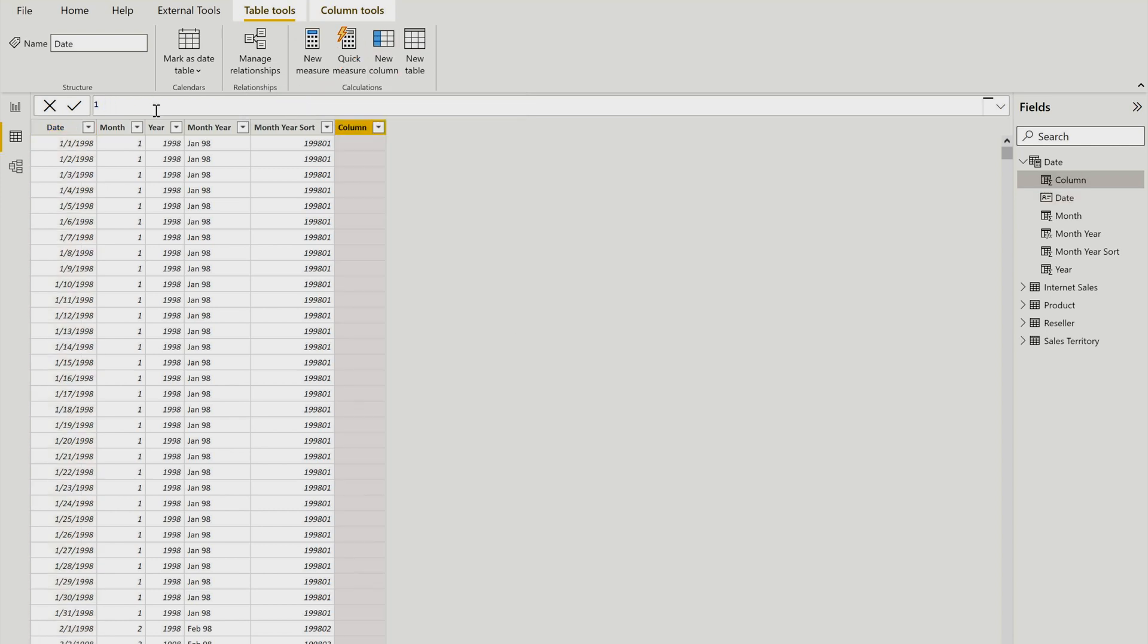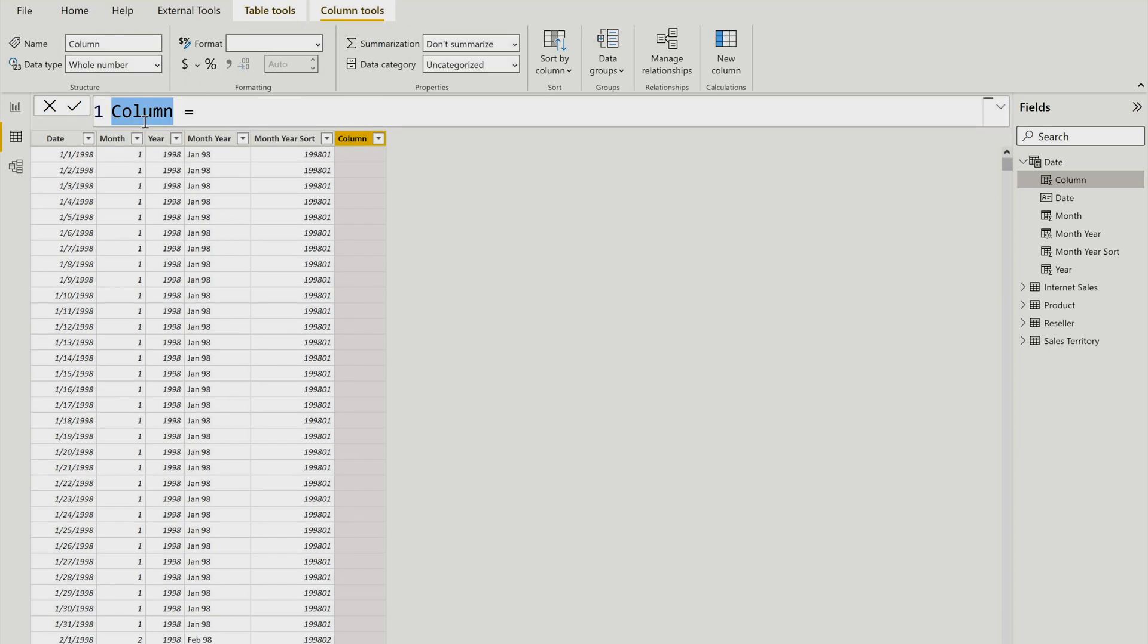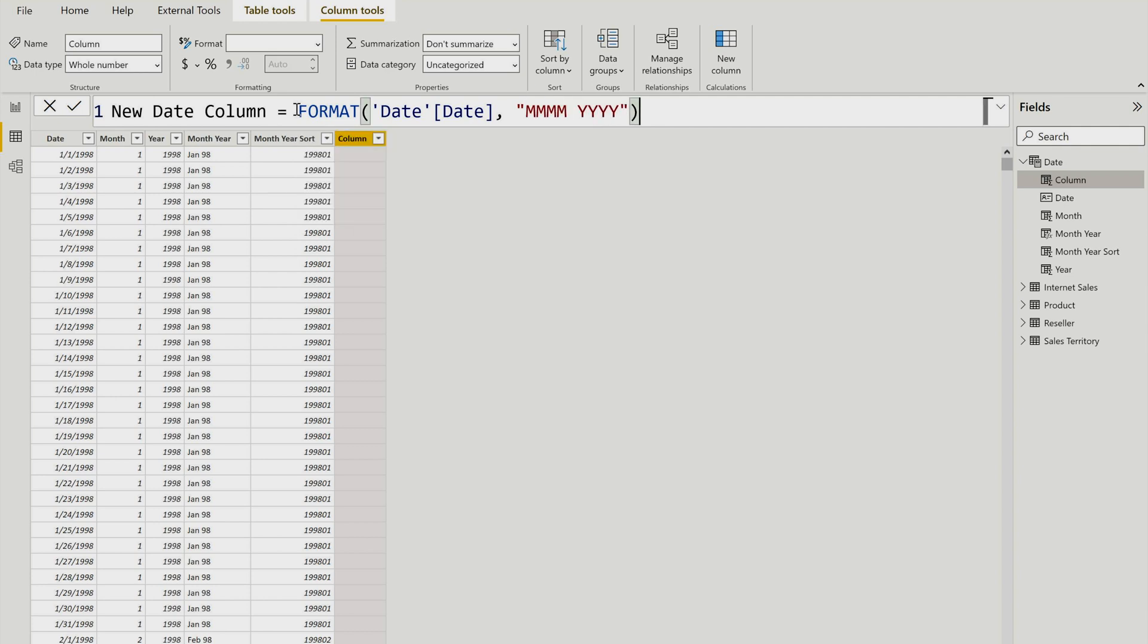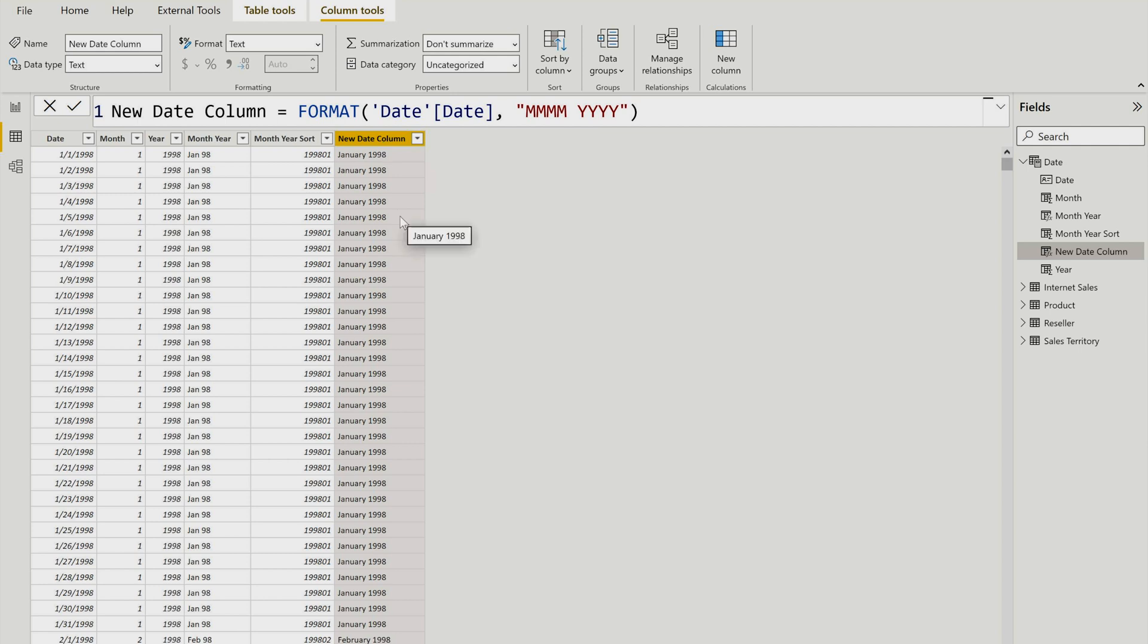I'm going to write it as a new date format. We'll give it a name: new date column. Here I can use one DAX function which is FORMAT, and that FORMAT function first takes one column which is going to be my date column from date table. Select this one and here I can mention the new date format. After that you can simply hit your return button or click over here. It would take some time and now you can see that your new column has been created.